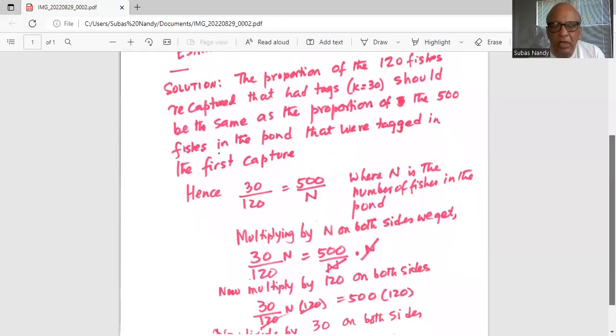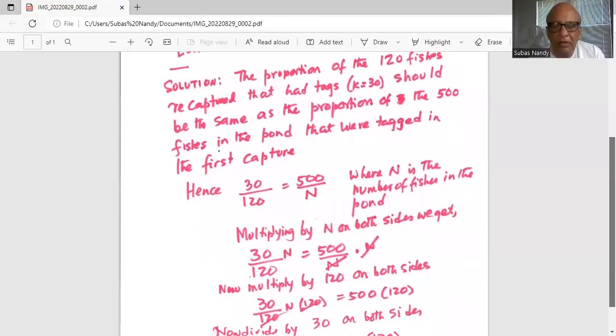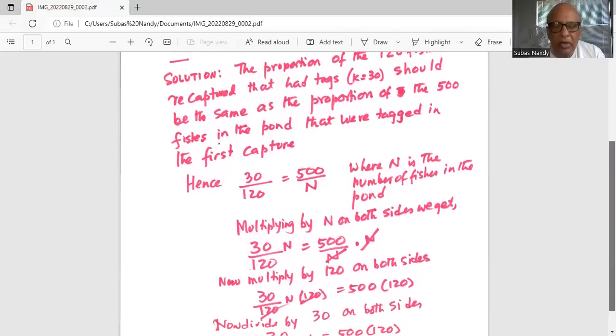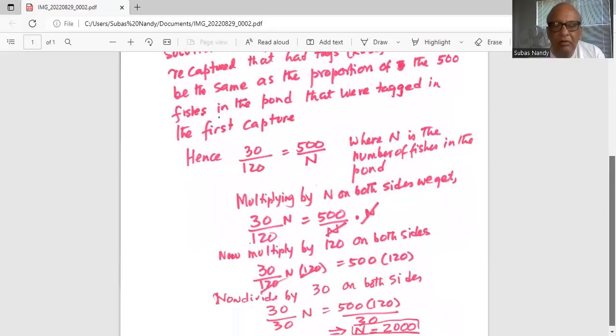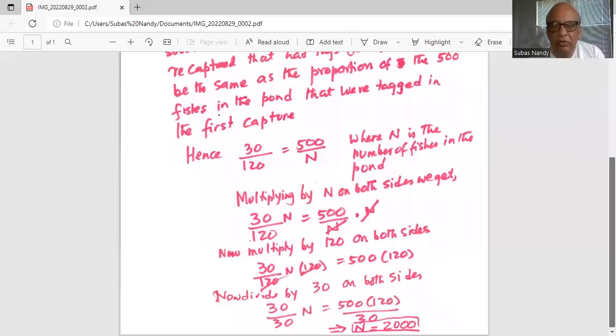Now we will multiply both sides by 120, and 120 in the numerator and denominator on the left hand side of the equal sign cancel out. So we have 30 times N equal to 500 times 120.